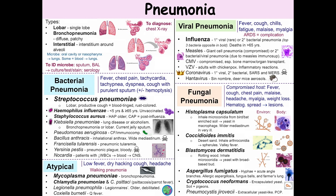Francisella tularensis causes tularemia. There are about 300 cases a year in the U.S., and about 90 cases a year of pneumonic tularemia. This causes rabbit fever, but in the pneumonic case, mortality is pretty high — about 60%. Yersinia pestis causes plague. It has this bipolar staining that looks like safety pins. It's acquired from a flea bite or someone else with pneumonic plague.